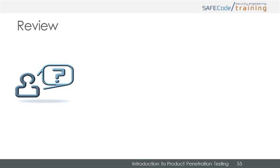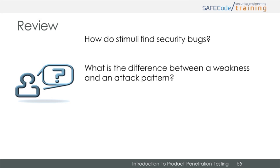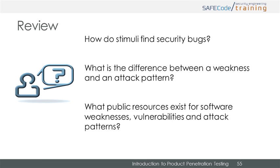Let's review what we just learned. Stimuli or attack patterns are given to target entry points in order to trigger observable behavior in the target that indicates the presence of a security vulnerability. A weakness is the implementation bug or architectural flaw responsible for the security vulnerability, while an attack pattern is a test stimulus designed to exploit or trigger observable behavior for a specific weakness. The MITRE CWE database contains a list of weaknesses and the MITRE CAPEC database contains a list of attack patterns.